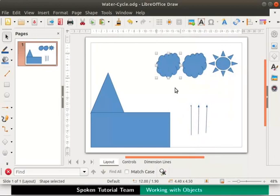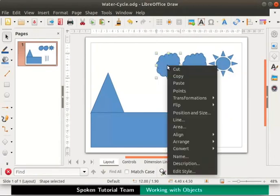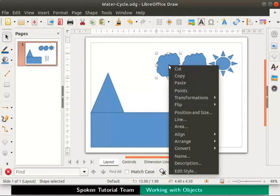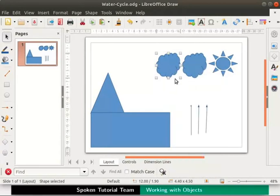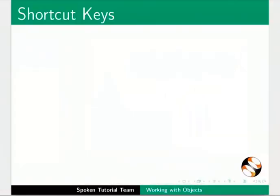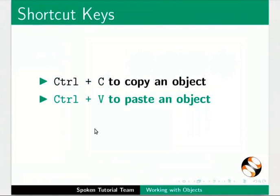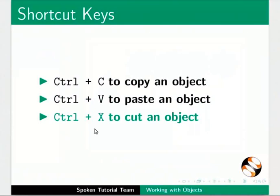Let us create one more cloud in the same manner. Select the cloud, right click and select copy, again right click and select paste. Now select the copied cloud and move it to the left. We can also use shortcut keys to make copies of objects: Ctrl+C to copy an object, Ctrl+V to paste an object, Ctrl+X to cut an object. Switch back to the draw file.